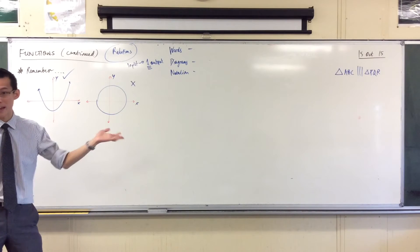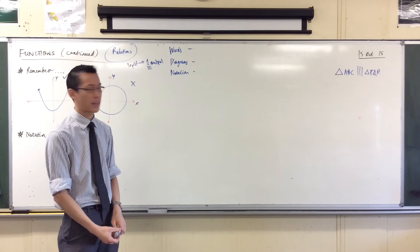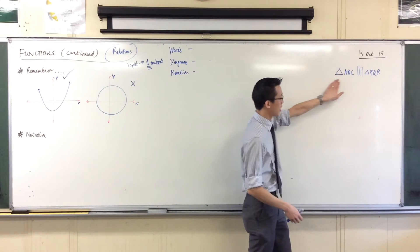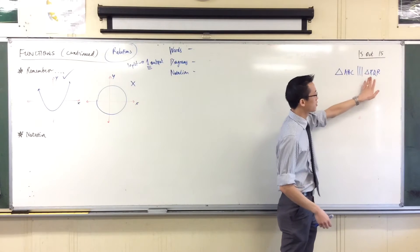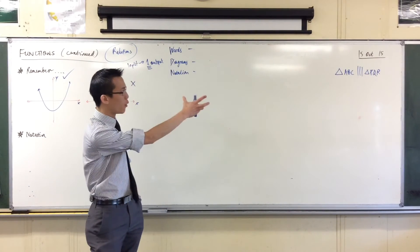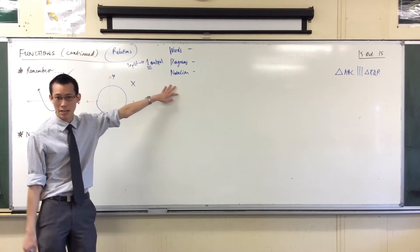It's talking about a pair of triangles. You've got names for each of them, and they are similar to each other. Now, I could write that sentence. Triangle da-da-da-da-da is similar to triangle da-da-da-da. What does similar mean? But I've boiled it down into this tiny little space, and that's the power of notation.